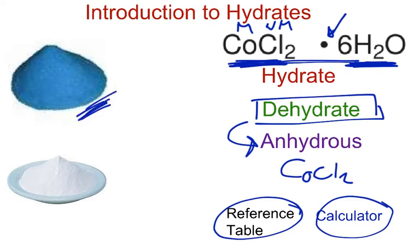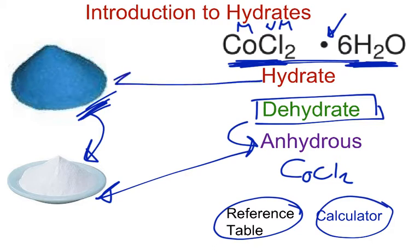This is called copper sulfate pentahydrate, normally a blue powder. And when you heat it up, it turns to this grayish, whitish color right here. This is the anhydrous form of copper sulfate pentahydrate. The hydrated form has this blue color, and the anhydrous form without water has this grayish, whitish color.